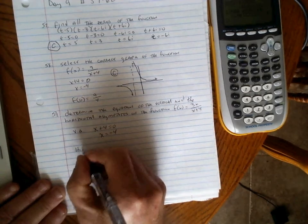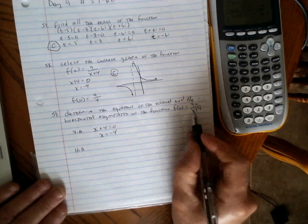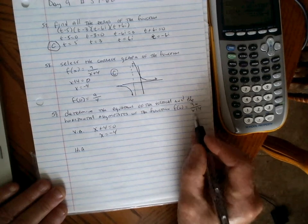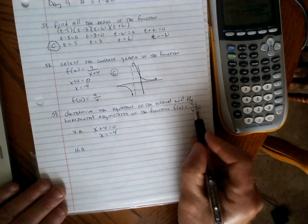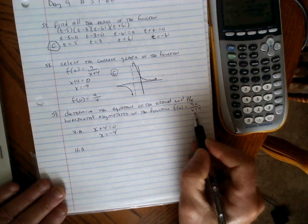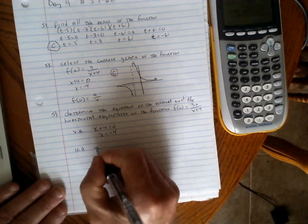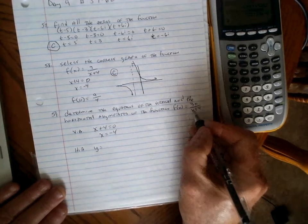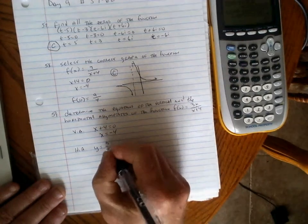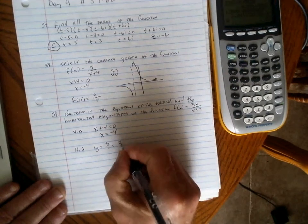Horizontal asymptotes depend on the degree and leading coefficients. The degree on top is 1 and on bottom is 1, so the horizontal asymptote is y equals the leading coefficient of the top over the bottom: 3 over 1, or y equals 3.